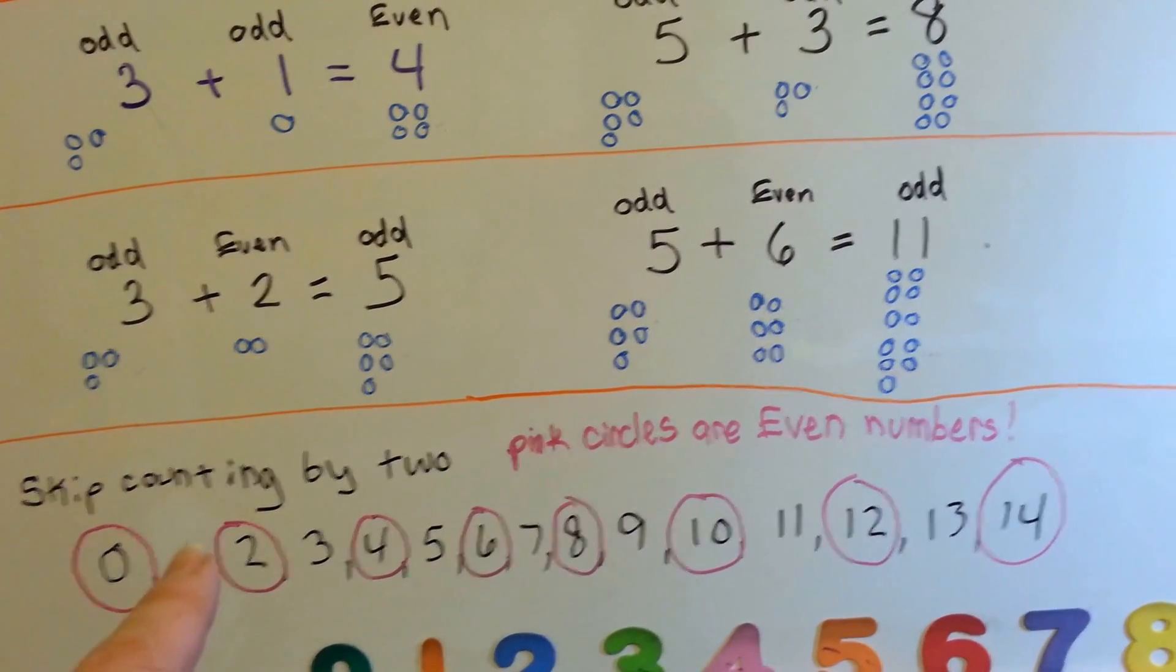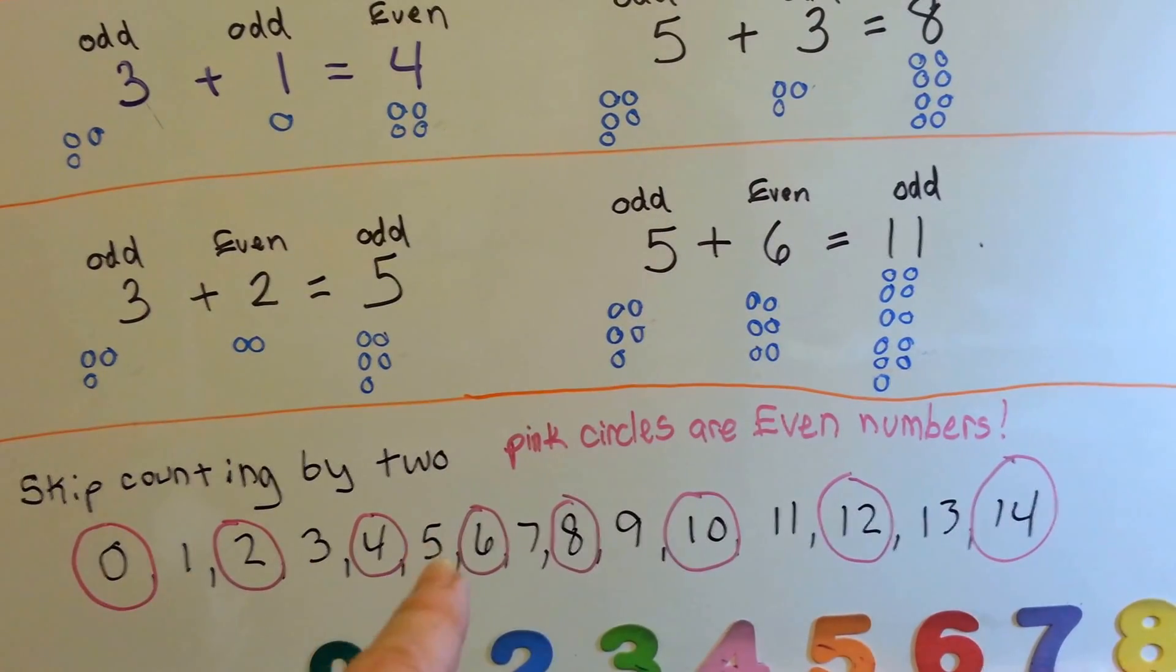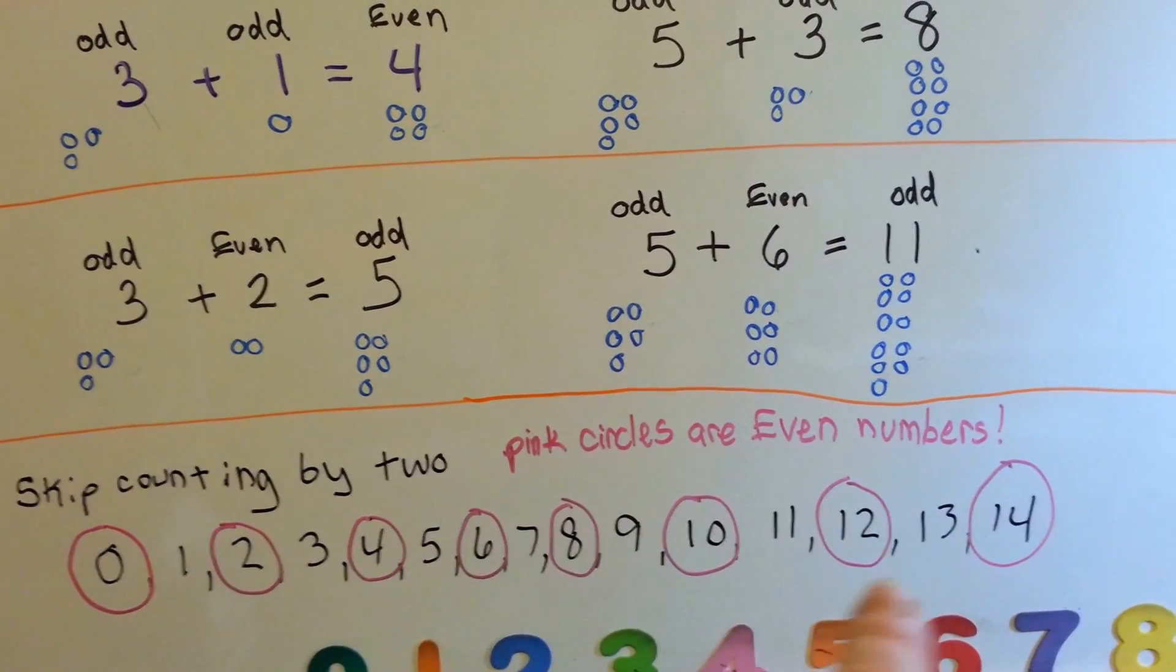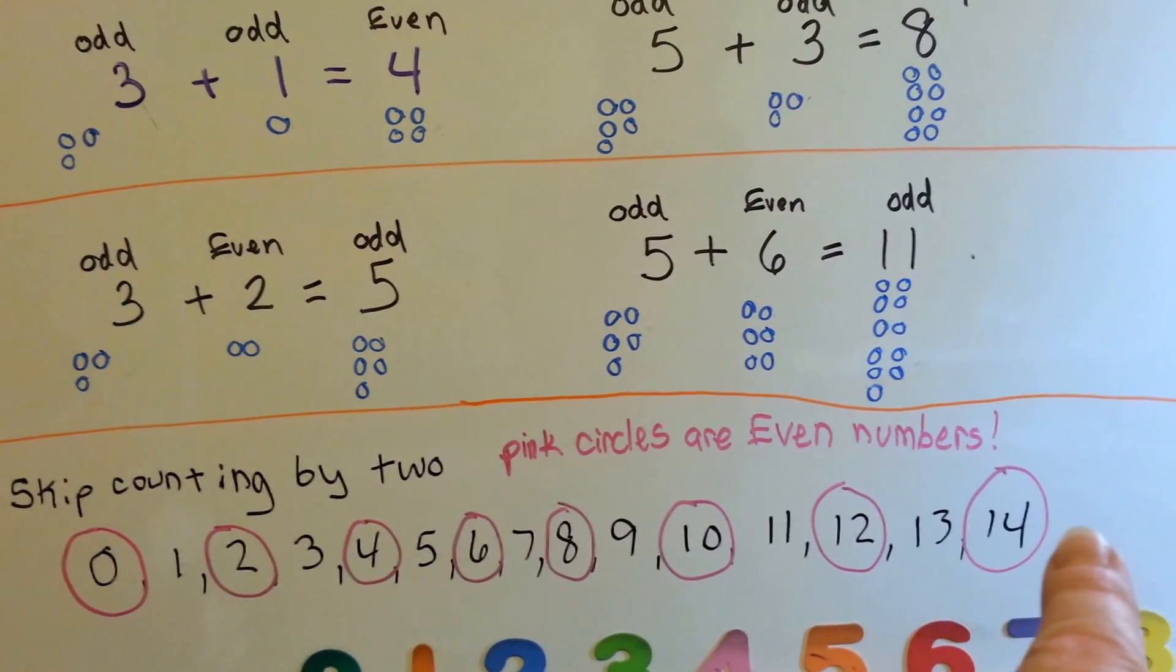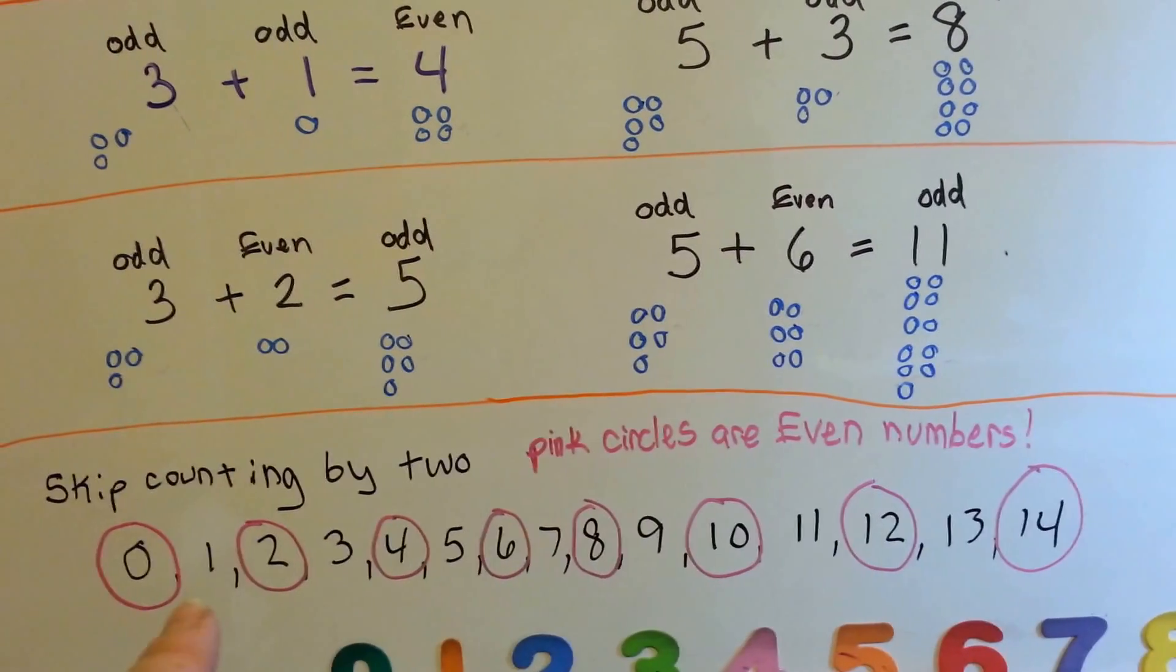The ones in between, 1, 3, 5, 7, 9, 11, 13, and the next one would be 15 over here, wouldn't it? Those would all be odd.